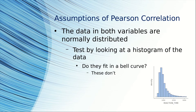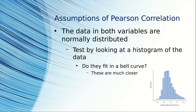Another assumption of a Pearson's correlation is that the data must be roughly normally distributed. If you do a histogram of the data, you can eyeball it and see if the data fit into a bell curve. These data don't, but these data are a lot closer to a bell curve.